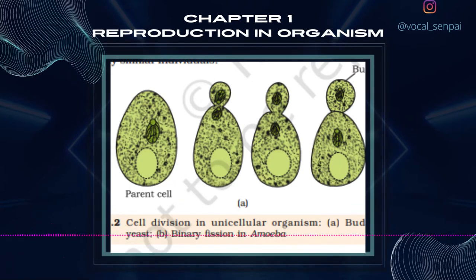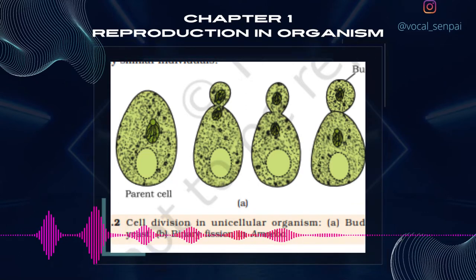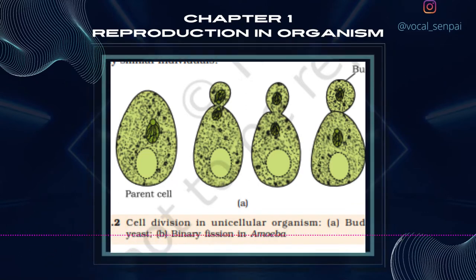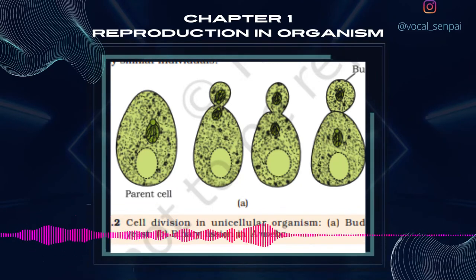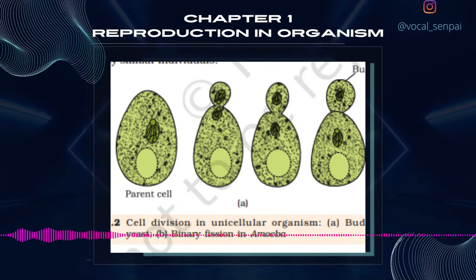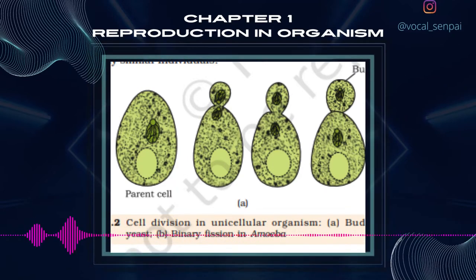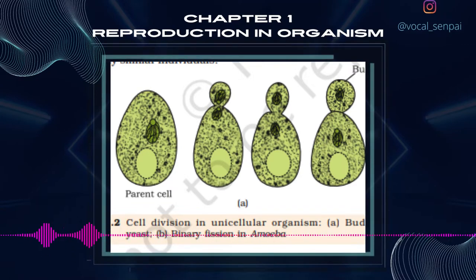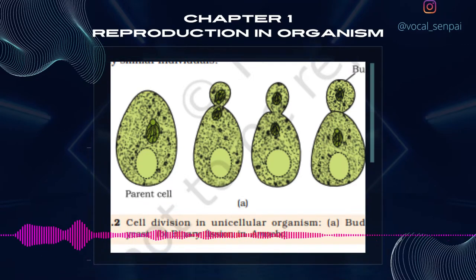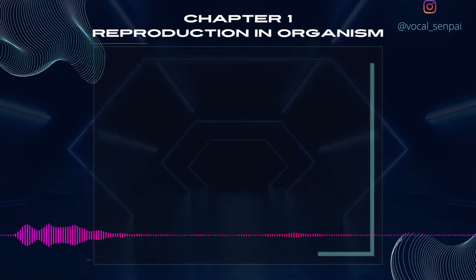Asexual reproduction. In this method, a single individual, the parent, is capable of producing offspring. As a result, the offspring that are produced are not only identical to one another but are also exact copies of their parent. The term clone is used to describe such morphologically and genetically similar individuals. Let us see how widespread asexual reproduction is among different groups of organisms.